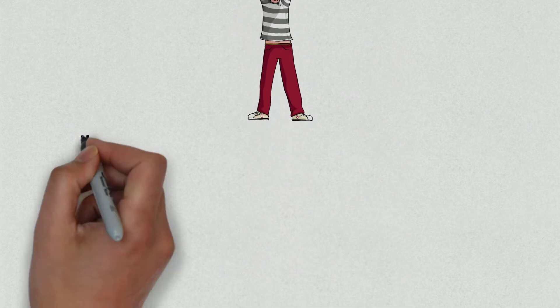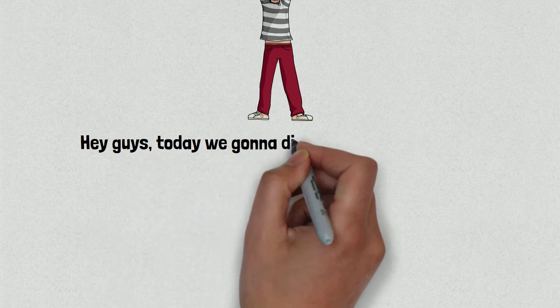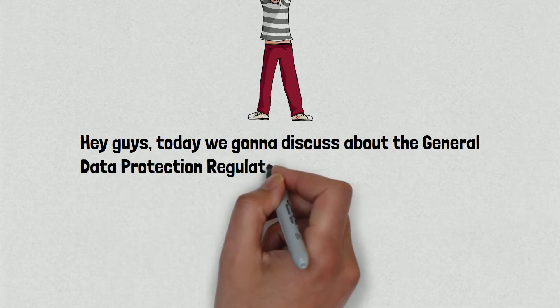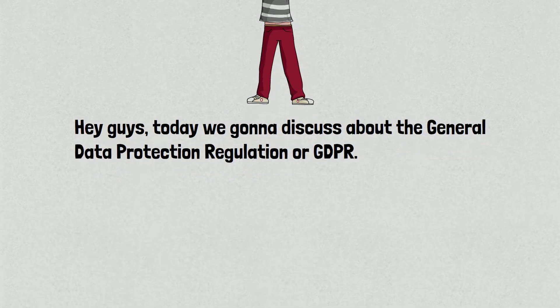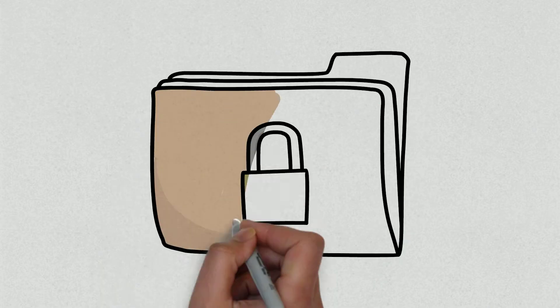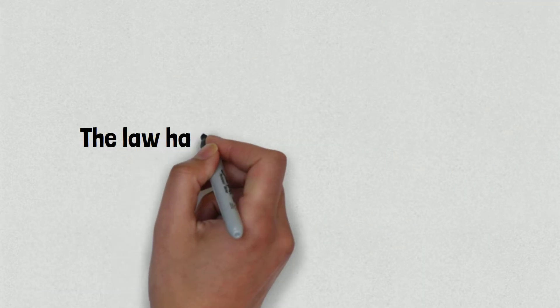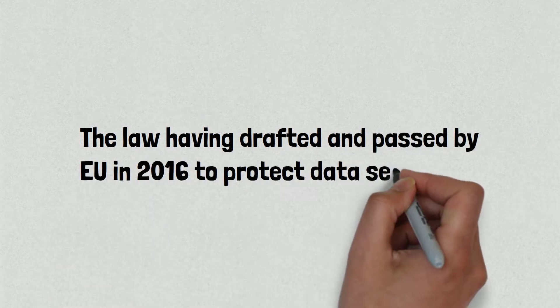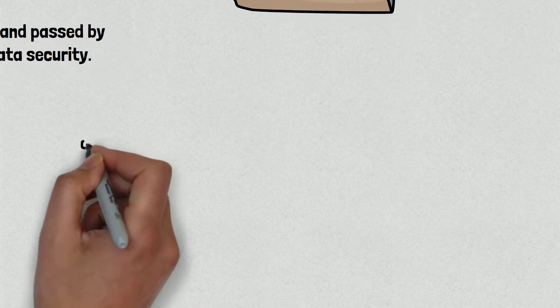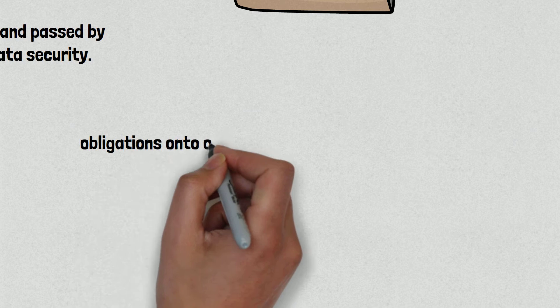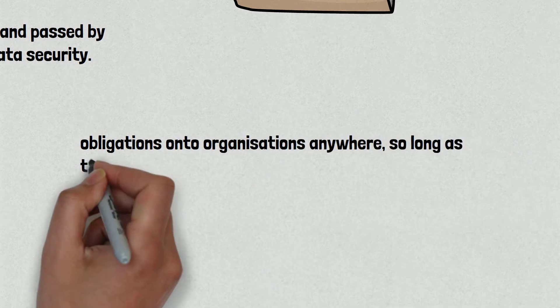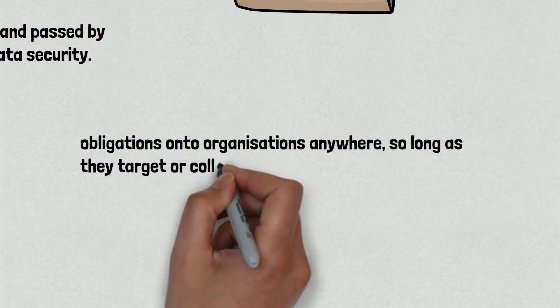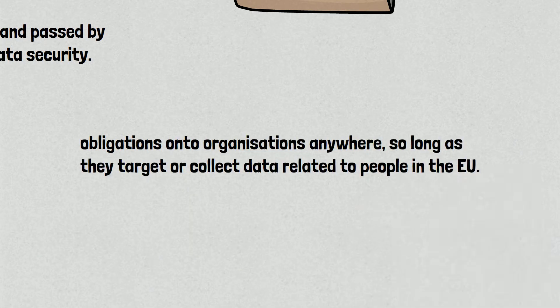Today we're going to discuss the General Data Protection Regulation, or GDPR. The GDPR is a law that is meant to protect user data in the European Union. The law was drafted and passed by the EU in 2016 to protect data security. It imposes obligations onto organizations anywhere, so long as they target or collect data related to people in the EU.